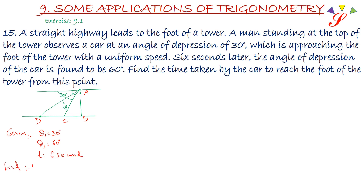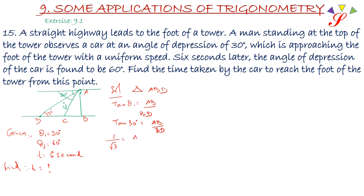We have to find the time taken by the car to reach from point C to B. Let's take the first triangle with 30 degree angle, that is triangle ABD. Tan theta 1 equals AB upon BD. So tan 30 degree equals AB upon BD. Tan 30 is 1 by root 3, which equals AB upon BD. So AB equals BD upon root 3.